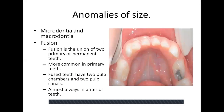Size anomalies include macrodontia and microdontia. Microdontia is seen in ectodermal dysplasia, chondroectodermal dysplasia, hemifacial microsomia, and Down syndrome. Another example of microdontia is the peg lateral. Macrodontia is seen in facial hemihypertrophy and orodental syndrome.